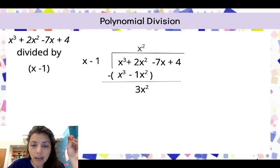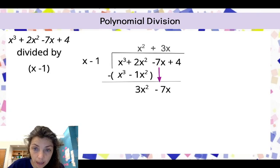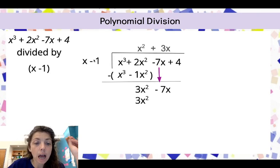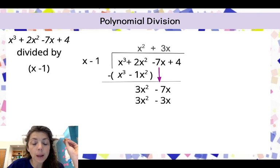Here we go again. We're going to bring down our minus 7x, and now I'm going to divide again. How many times does 3x² go into x? Or we can think of it like division, and that would be 3x. 3x times x is 3x². 3x times negative 1 is negative 3x.